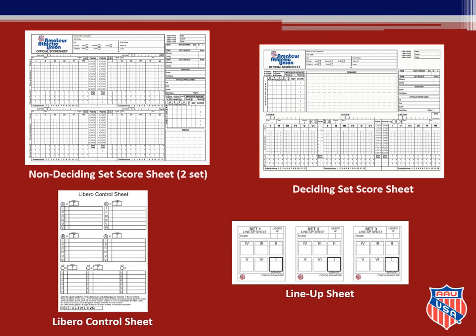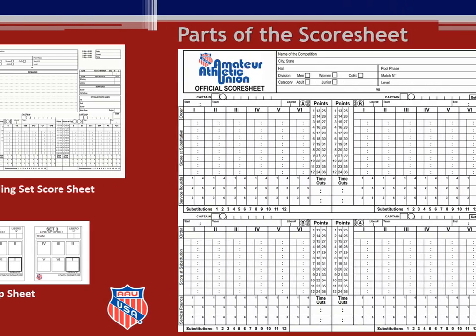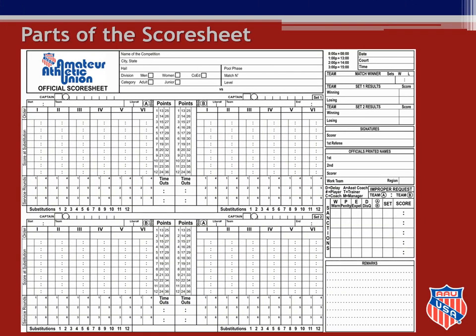On this slide you can see examples of different sheets that are used for AAU scoring. These include a two-set non-deciding score sheet, a deciding set score sheet, a Libro control sheet, and a lineup sheet. Let's look at the different parts of the score sheet you will be using to keep score.